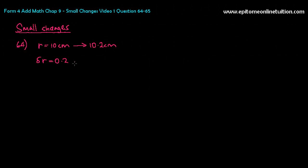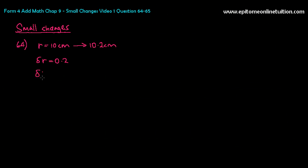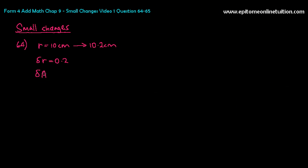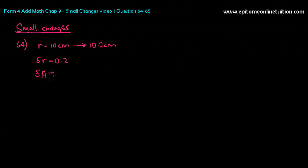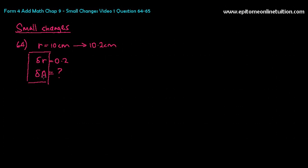From the question, we can get this information. Then they say find the approximate change in its area — that means you are going to find delta A. In other words, what is the change in area when the radius increases by 0.2 cm? That's what you're looking for. So for small changes, you only need two things: delta A and delta R.